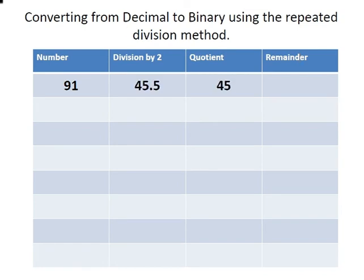First off I'm going to divide 91 by 2. The quotient is the integer part of this, so it is 45, and the remainder is going to be 1. So when you divide 91 by 2 your answer is going to be 45 remainder 1. That's a way of expressing division without using decimals and fractions.